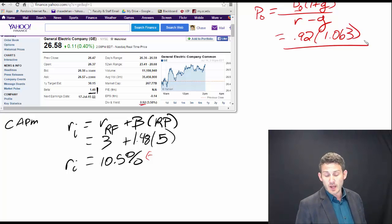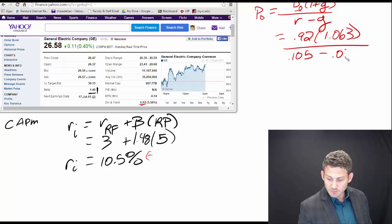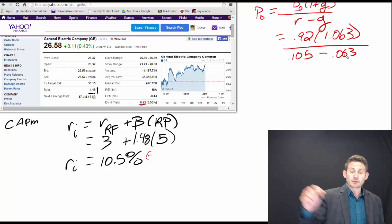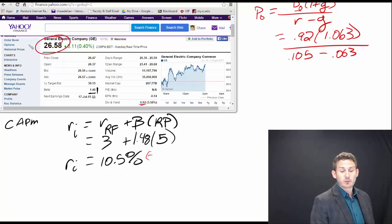And that is gonna be then divided by the required return, 0.105 minus 0.063. And that's gonna pull us out and bring us out to a number which is right around right there at $26.58.